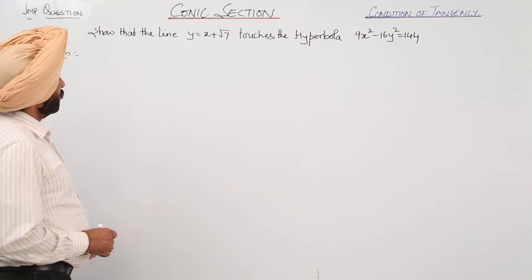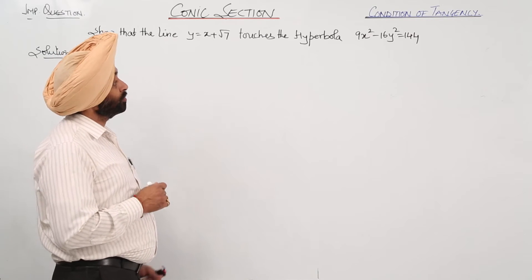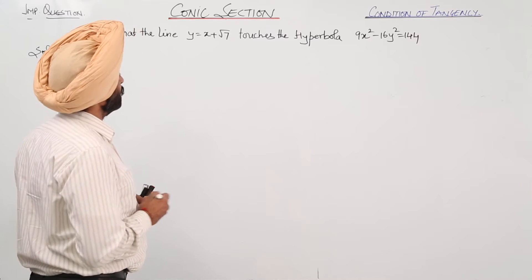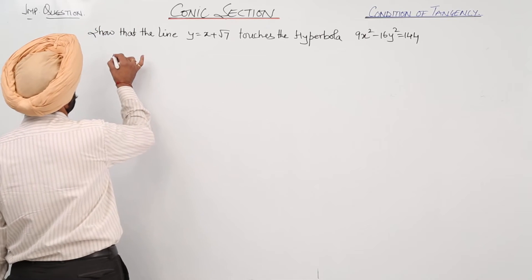Show that the line y equals x plus root 7 touches the hyperbola, and the equation of the hyperbola is 9x square minus 16y square equals 144.